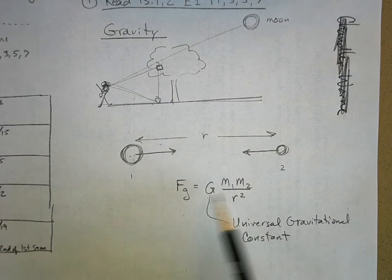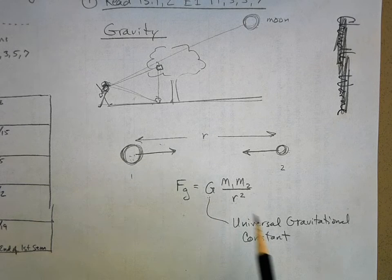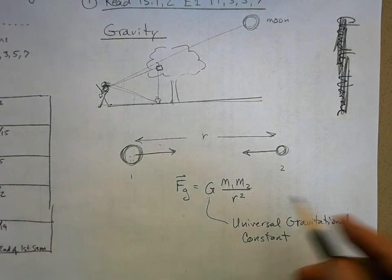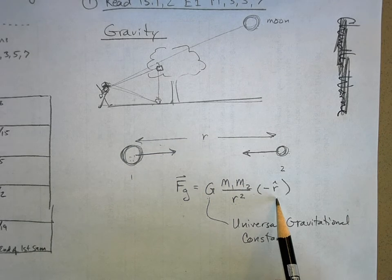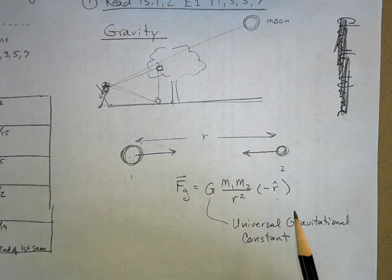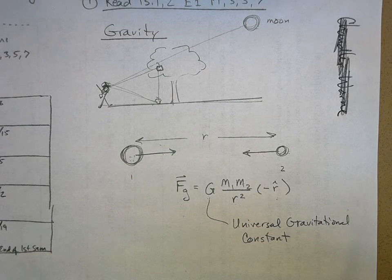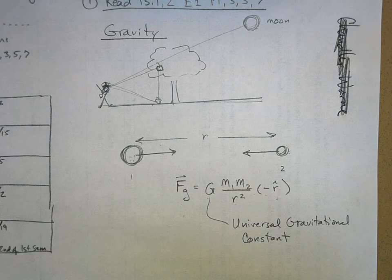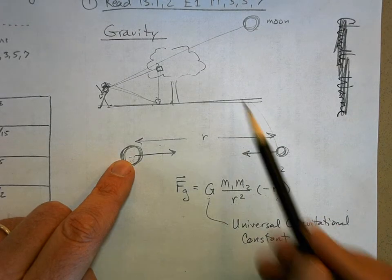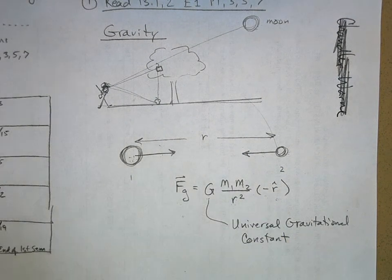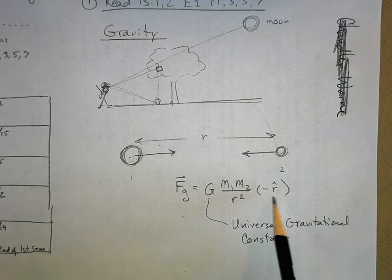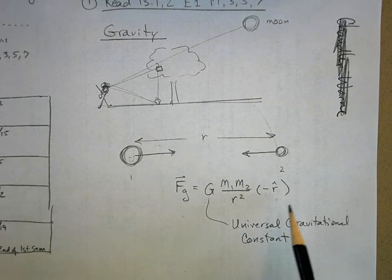Well, this force also has a direction, and we say that it's in the negative r hat direction. We dealt with r hat before. R hat means away from some central location, so negative r hat means towards some central location. In this case the central location is the center of the earth. This could be the moon going around the earth. But it just, if it's two objects, it just means hey this force is an attractive force. If it's a repulsive force you can call it positive r hat.